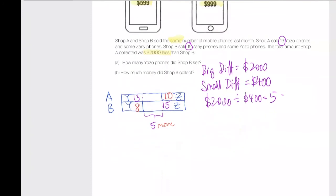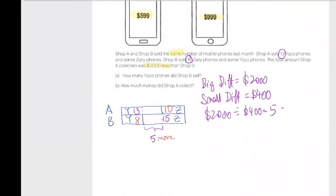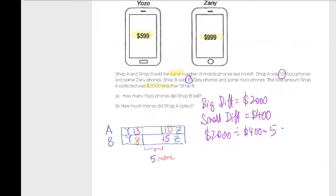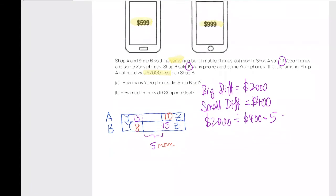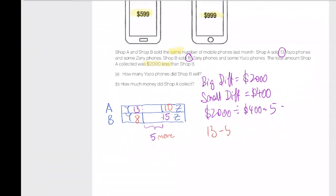Your answer for A is actually 8. I'm going to quickly repeat myself again. Why is it 8? It's because the big difference here is 2,000, the small difference here is 400, which tells you that Shop A sold 5 more Yozo phones. Why Yozo? Because Yozo is cheaper. Yozo is cheaper and A collected less. Since A sold 13 Yozo phones, so B must have, so 13 minus 5 equals to 8 Yozo phones.